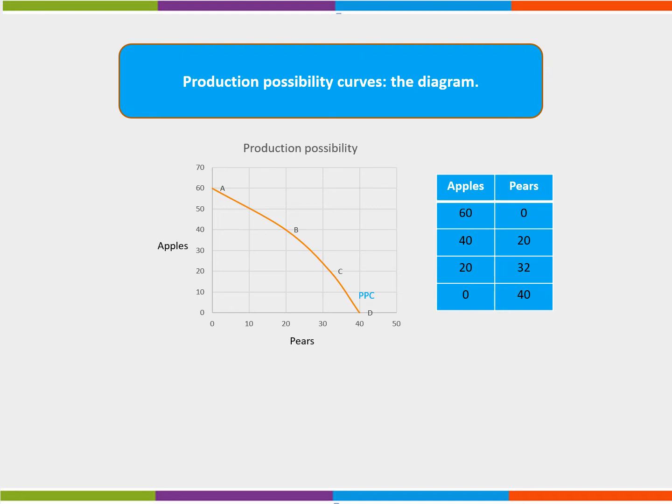This is an important point. The opportunity cost is what the firm has lost when changing production, that is the apples. It is not what is gained, that is the pears. Why not pause the video and work out the opportunity cost of moving from point B to point C. Again the opportunity cost is 20 apples, 40 minus 20.